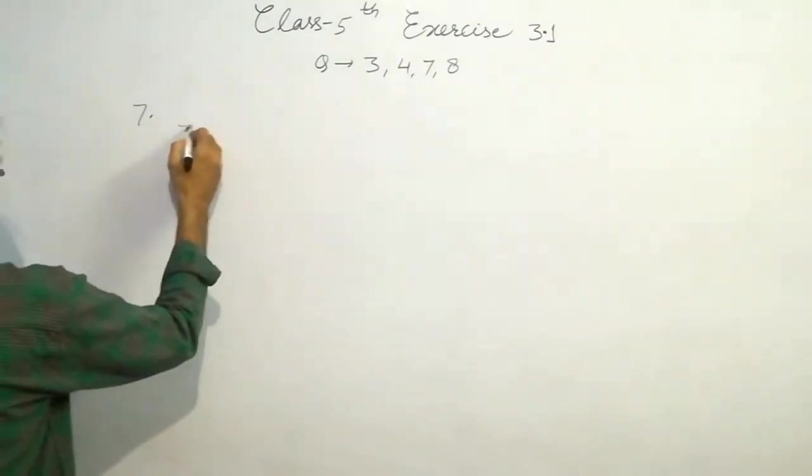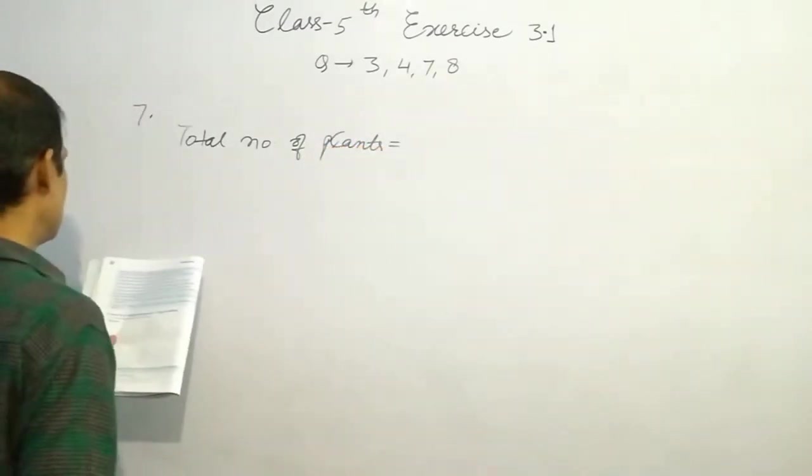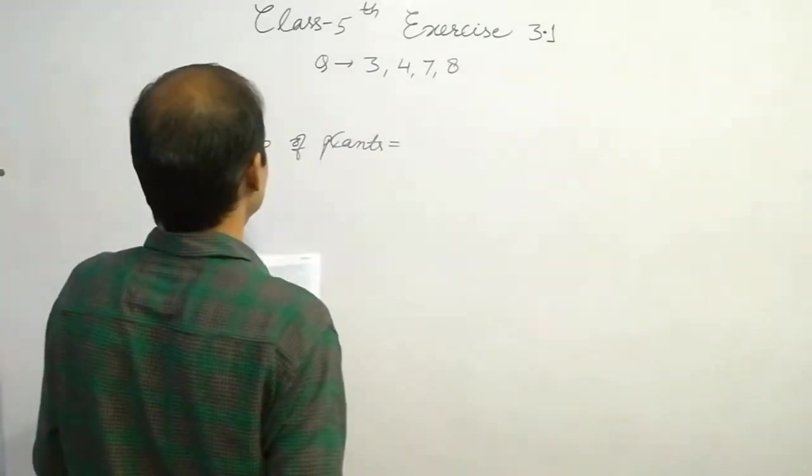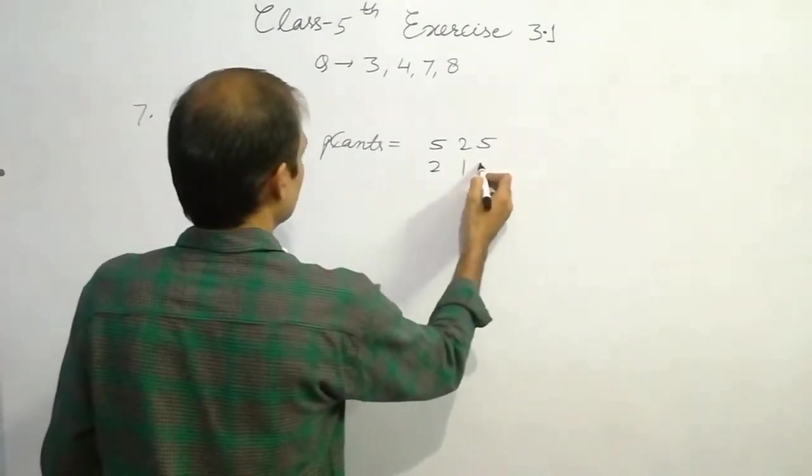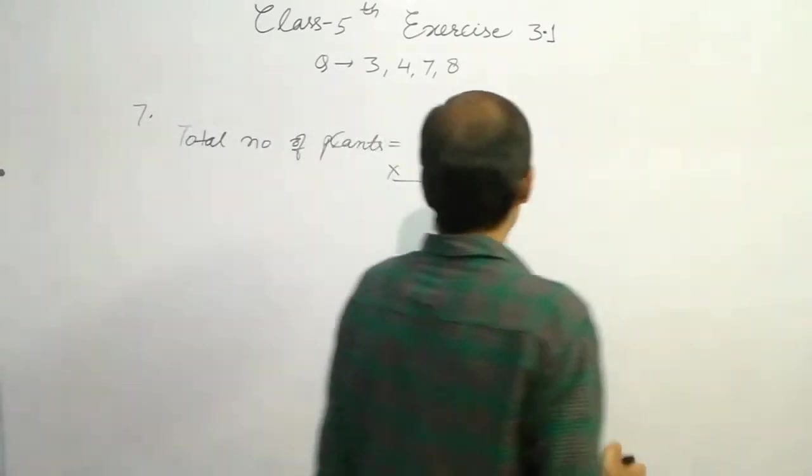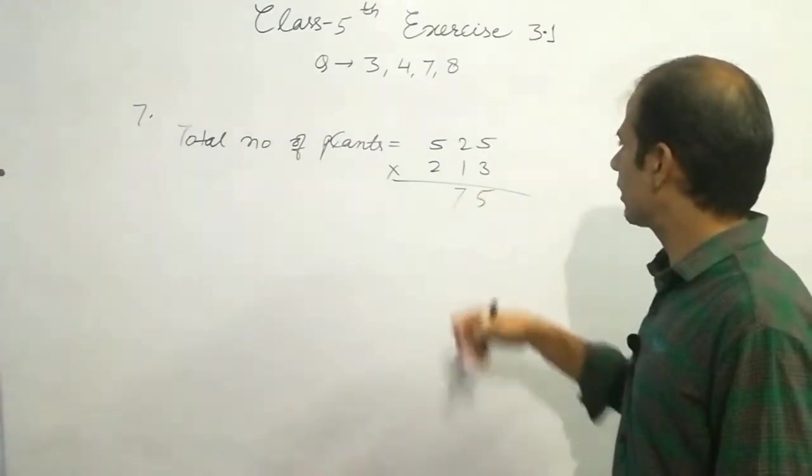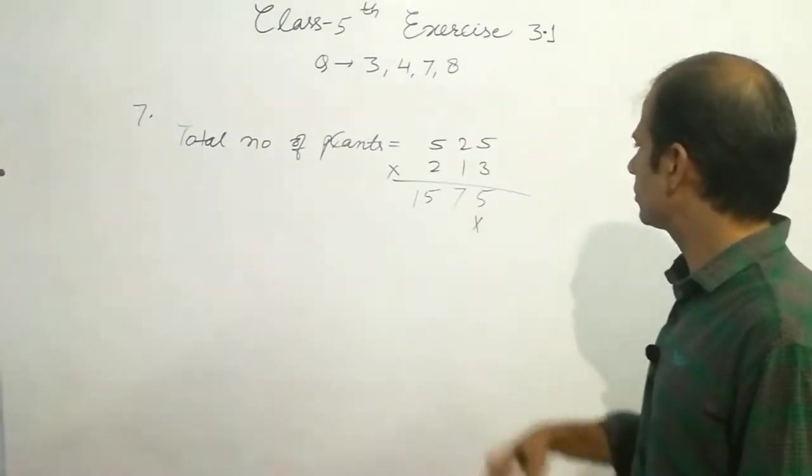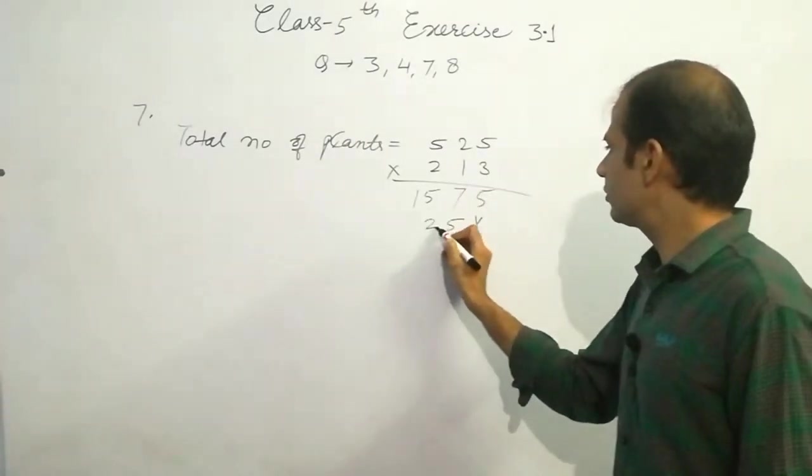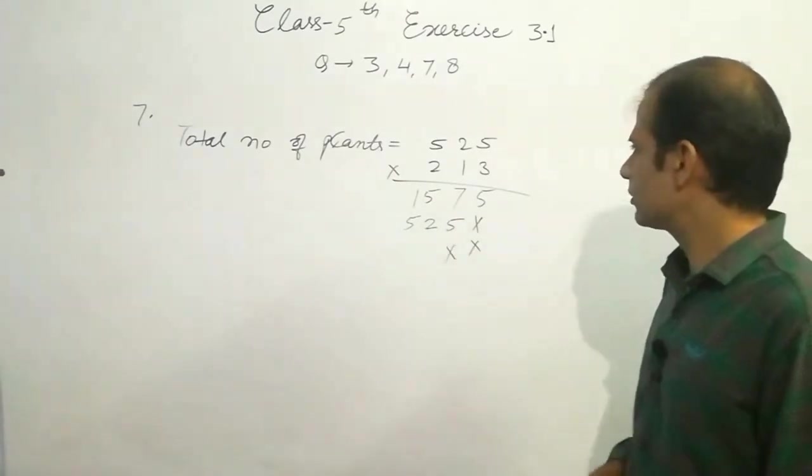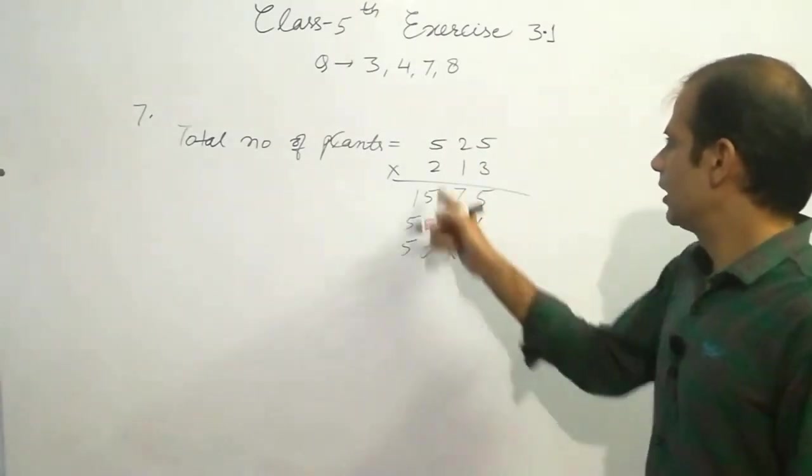Total number of plants, we write total number of plants. So multiply, question number 7. So multiply 525 by 213. So we have to multiply. 3 fives are 15, 1 carry. 3 twos are 6 plus 1, 7. And 3 fives are 15, cross. 1 is multiplied by all the digits, so we will obtain the same number. So it is 525, 525. Put double cross. 2 fives are 10, 1 carry. 2 twos are 4 plus 1, 5. And 2 fives are 10.